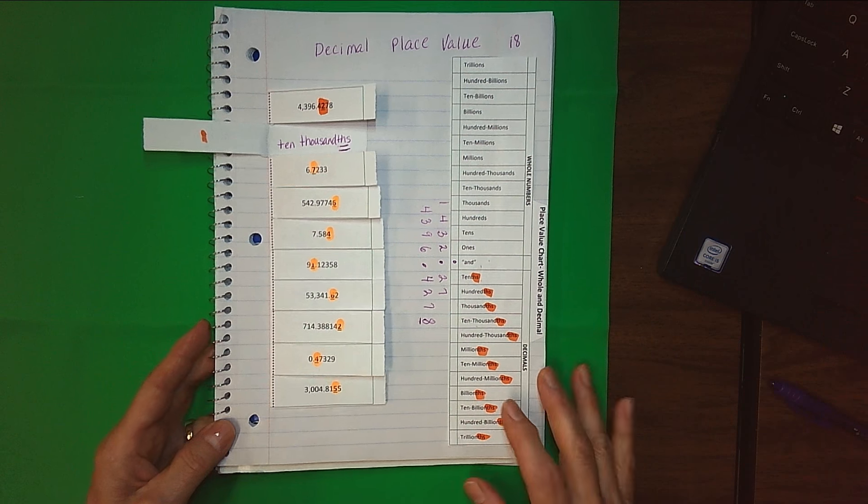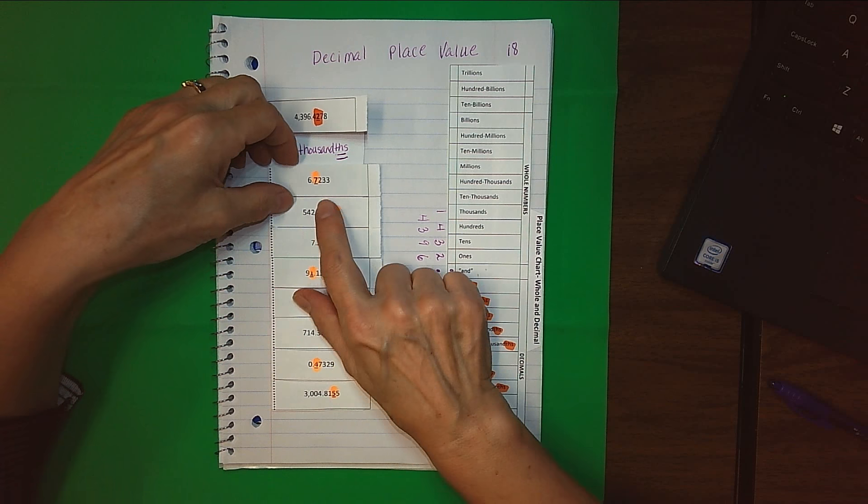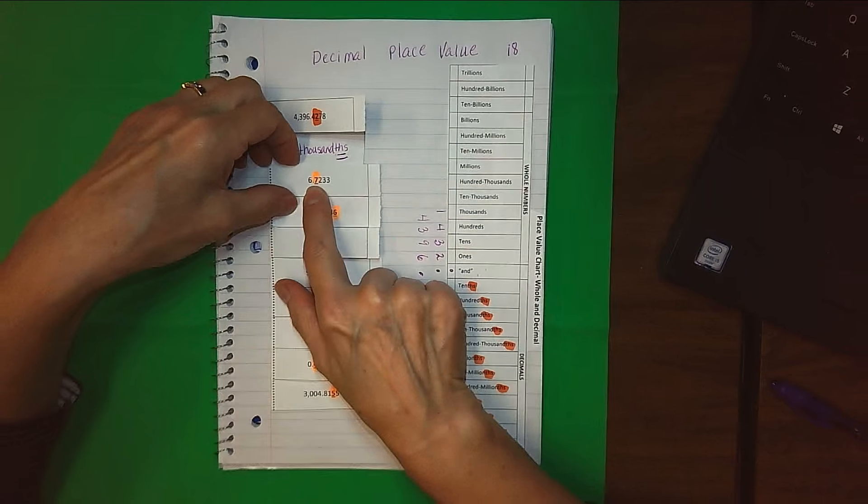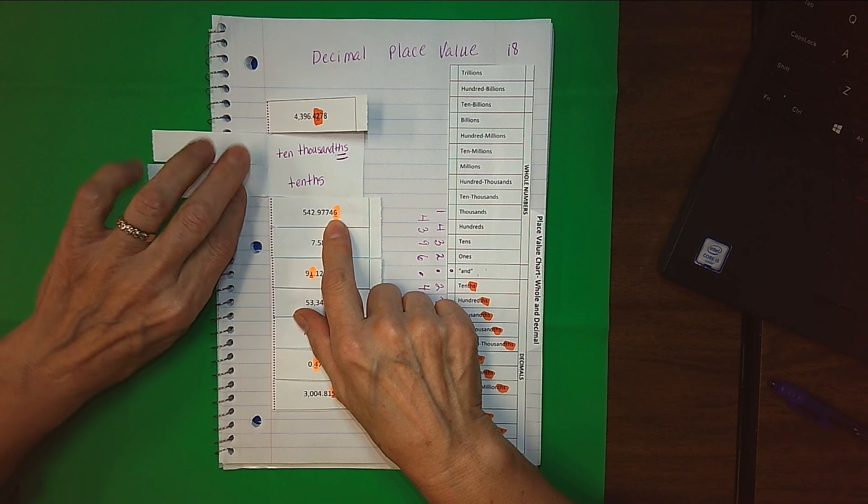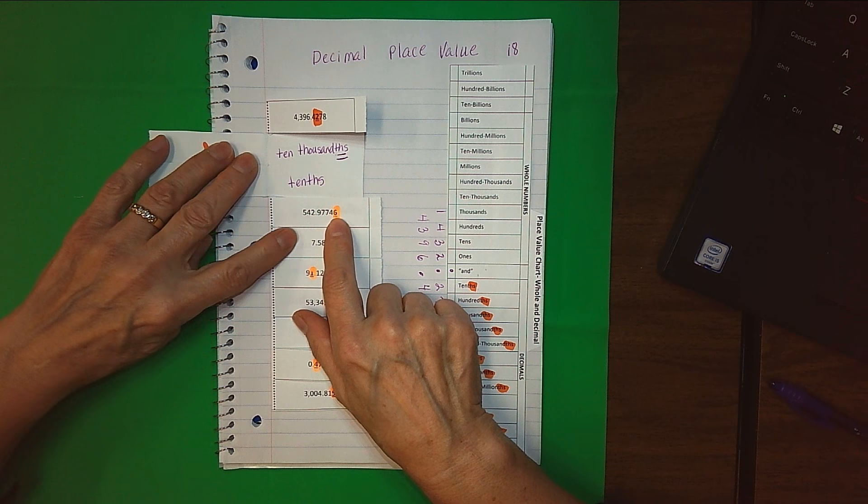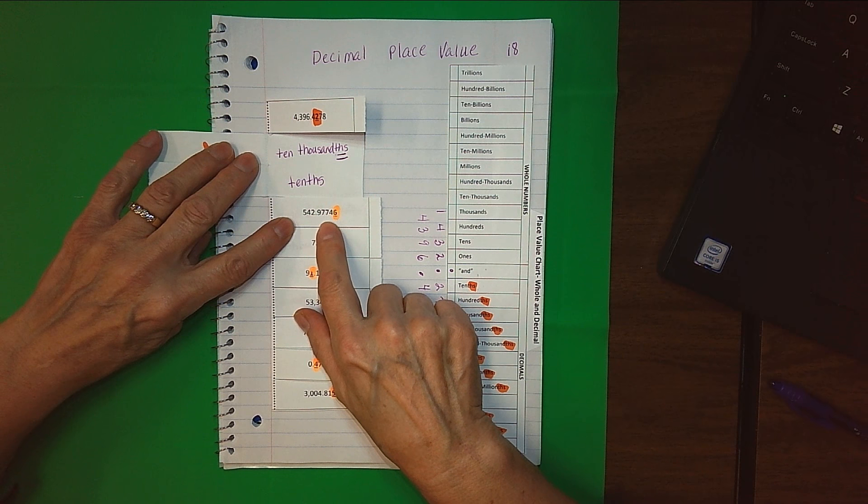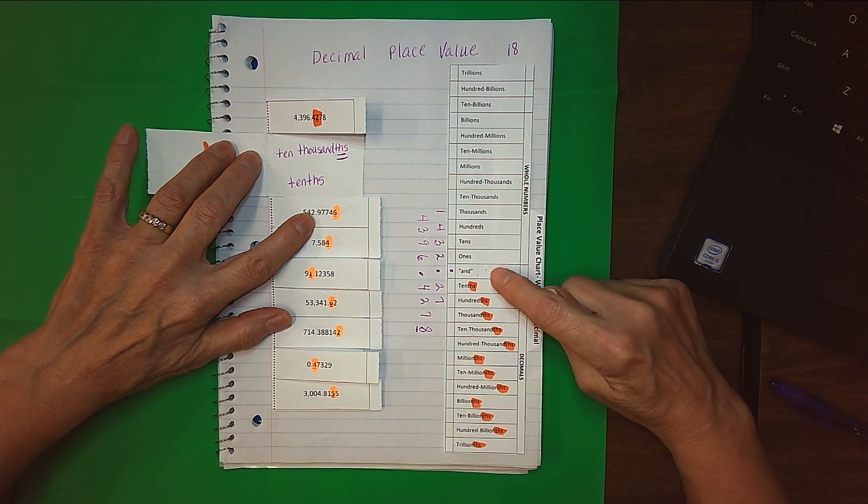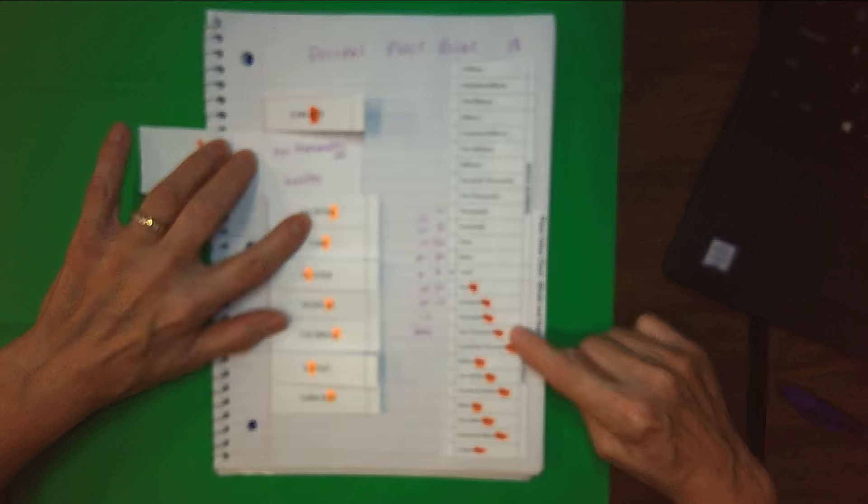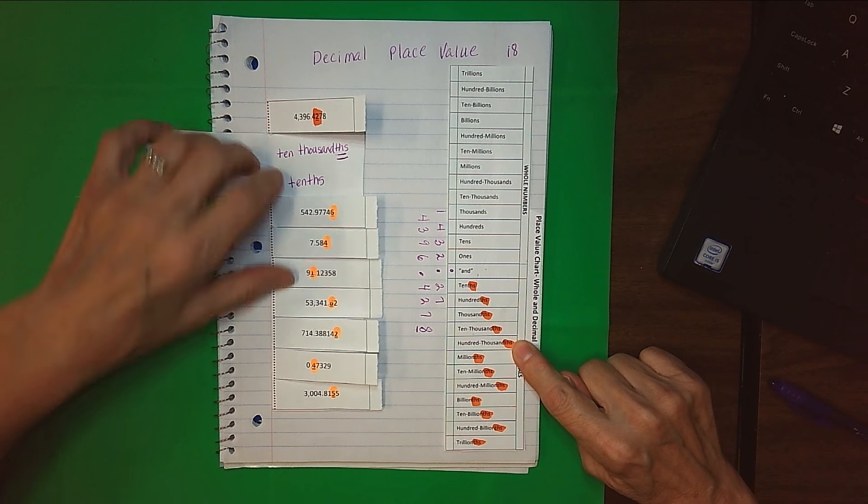All right, let's see how you did on that. For this number we're identifying the seven. Did you say tenths place? If you did, you were correct. On this number we're one, two, three, four, five places away from the decimal point. So one, two, three, four, five places puts me in the hundred thousandths.